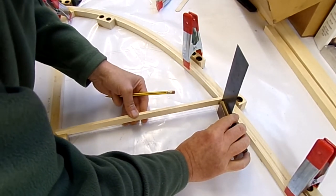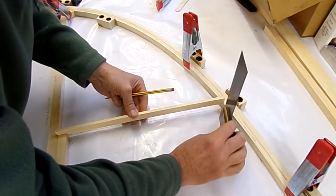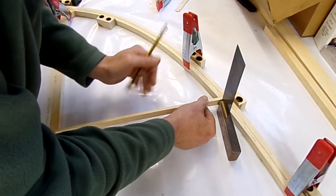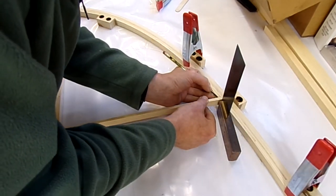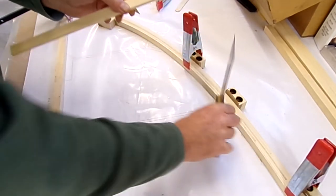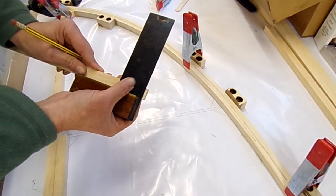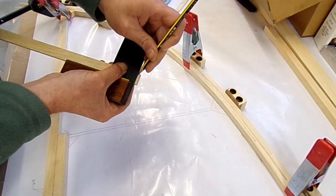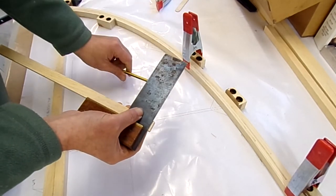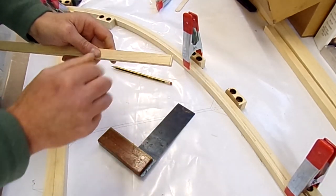So as it's on the line there. And I'll just mark on the other side. Draw that line across. And then we'll sand it.